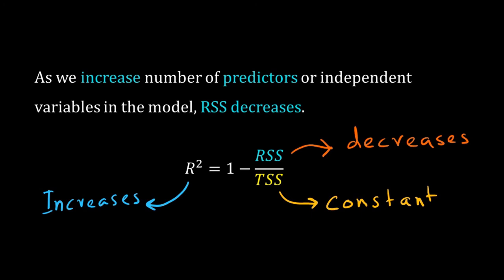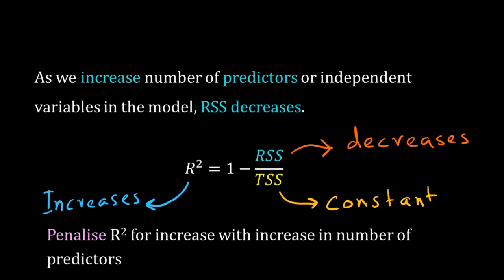So we should always choose a simpler regression model over a large one. But R squared is misleading us. With every increase in the number of predictors, R squared is increasing as if our model is getting better. So we want to penalize it. But how should I do that?